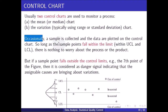Occasionally a sample is collected and the data are plotted on the control chart. So long as the sample points fall within the UCL and LCL, there is nothing to worry about regarding the process or the products. But if a sample point falls outside the control limits — for example the seventh point in the figure — it is considered a danger signal indicating that assignable causes are bringing about variation.